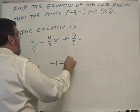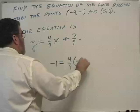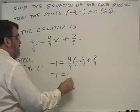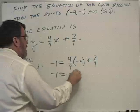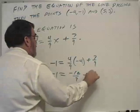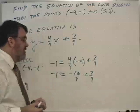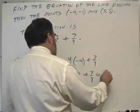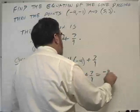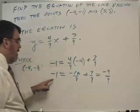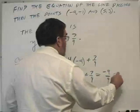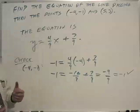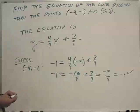Minus 1 equals 4 ninths times negative 4 plus 7 ninths. Negative 1 equals negative 16 ninths plus 7 ninths. Negative 16 plus 7 is negative 9 over 9, and that equals negative 1. So this point checks the equation. That's correct.